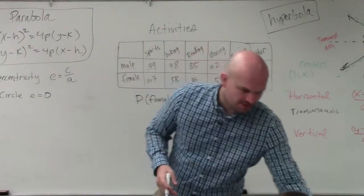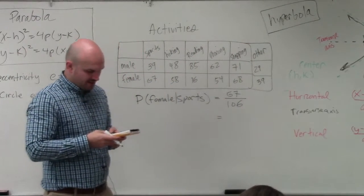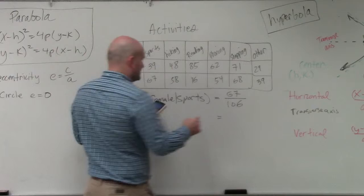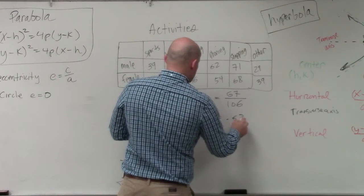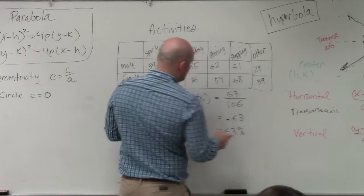So therefore, we'll take our calculator and do 67 divided by 106. We get 0.632, and we can rewrite that as 63%.